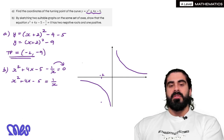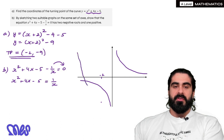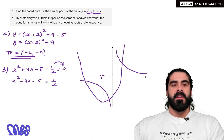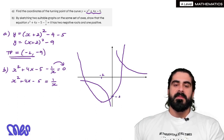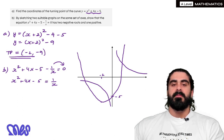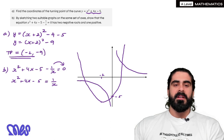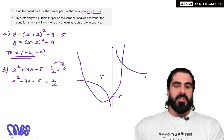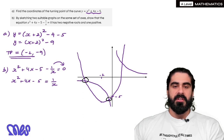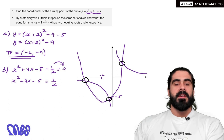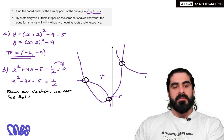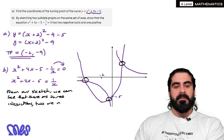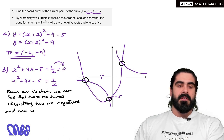We don't know exactly where the roots of the quadratic are, but we do know its y-intercept is minus 5. Because we know the y-intercept is minus 5, we know it's going to cross the x-axis on one of the positive sides. From the sketch, you can see there are three intersections: two are negative in terms of x, and one is positive. So from our sketch, we can see there are three intersections — two negative and one positive.